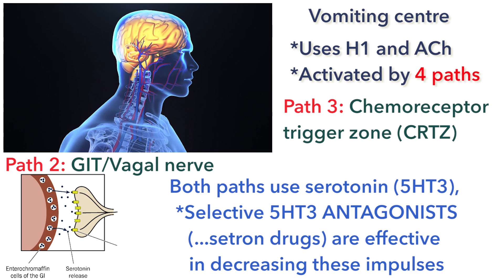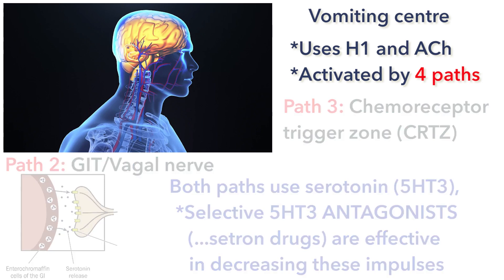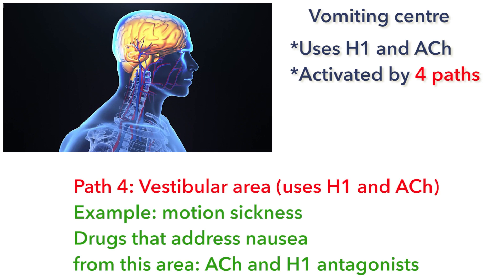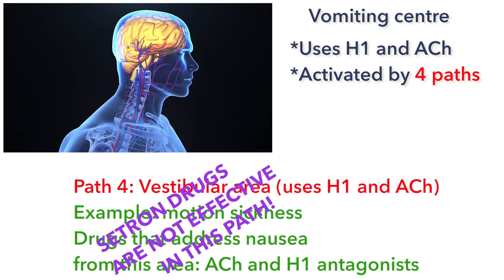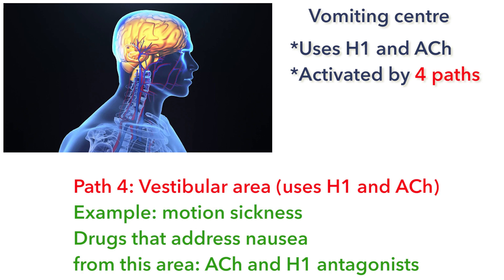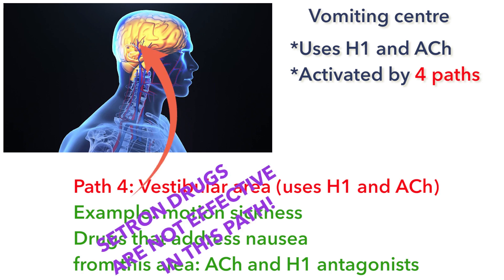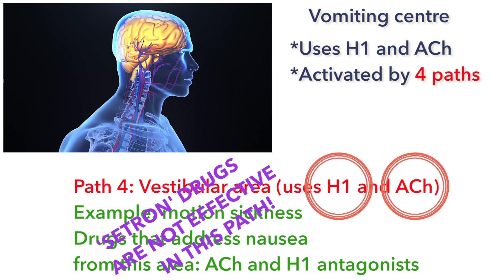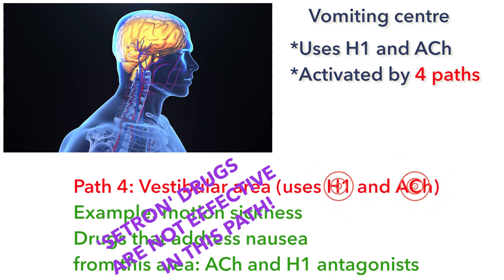Just knowing the pathways, you can actually predict the effectiveness of anti-emetics. One would not expect ondansetron to be an effective agent in decreasing emesis from motion sickness, because the pathways from the vestibular area into the vomiting center are not mediated by serotonin. In that instance, you would choose one of the first-generation antihistamines or the anticholinergic agents to decrease motion sickness.